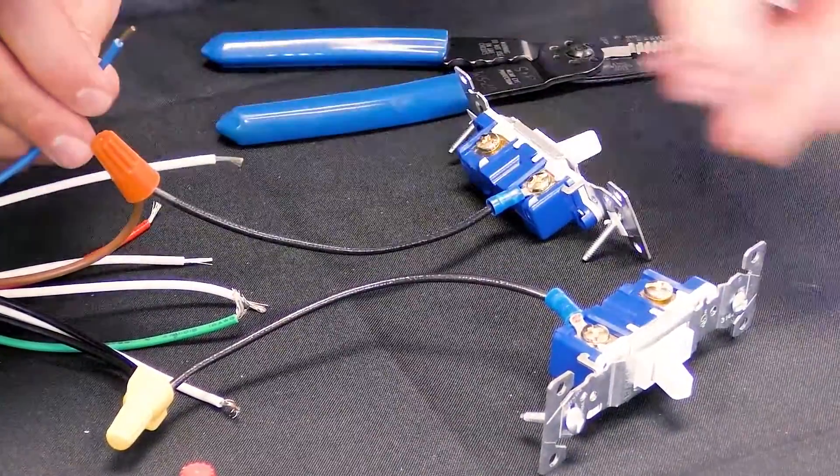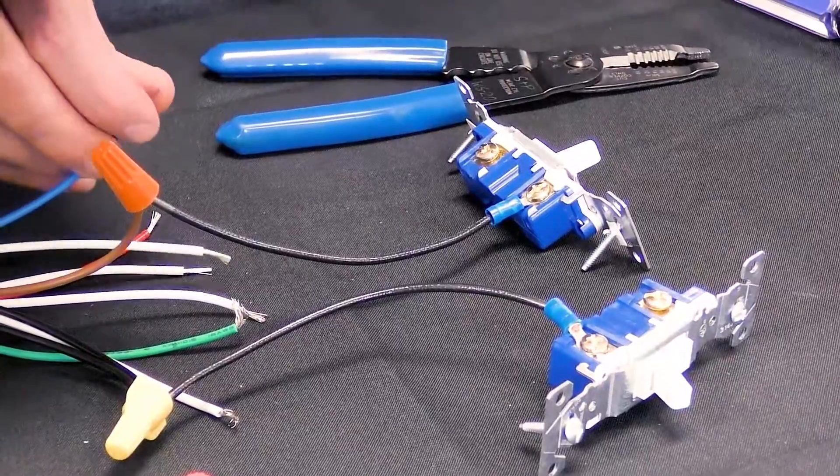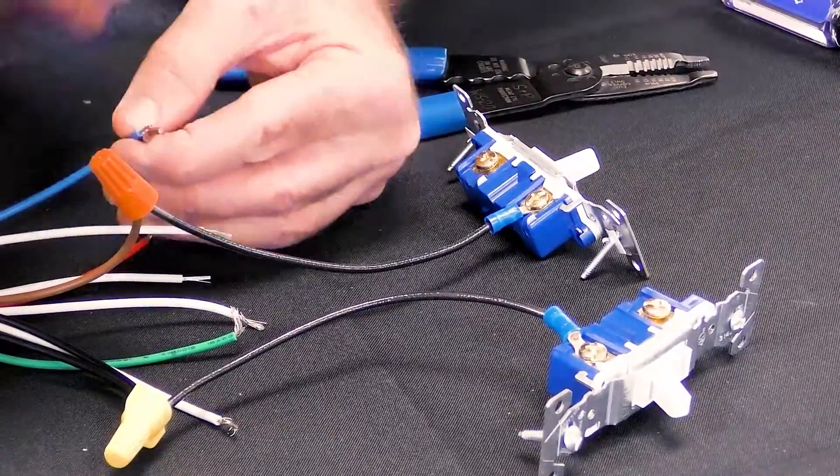Then, connect the blue wire from the main light wire harness to the load side of the switch.